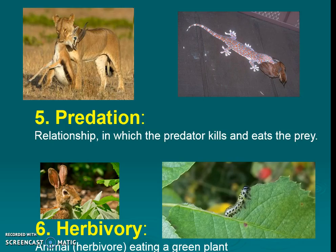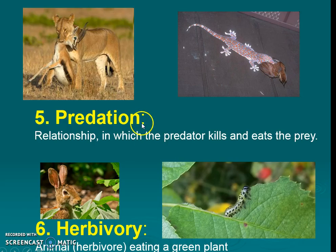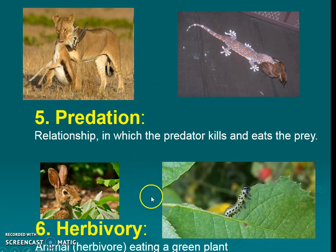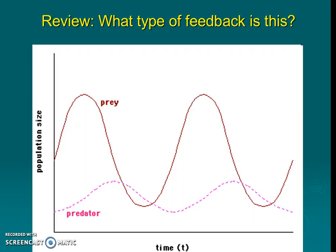Next we have predation, which typically refers to animals and involves the prey actually dying — unlike parasitism. Predator-prey relationships are really good examples of negative feedback loops. We also have herbivory, where an animal eats a green plant — not necessarily killing it, but we group it in a similar category. Don't forget: predator-prey is a negative feedback loop and represents stable equilibrium.